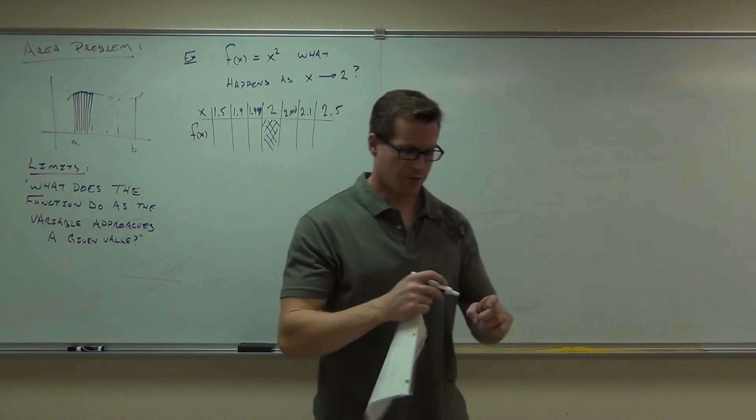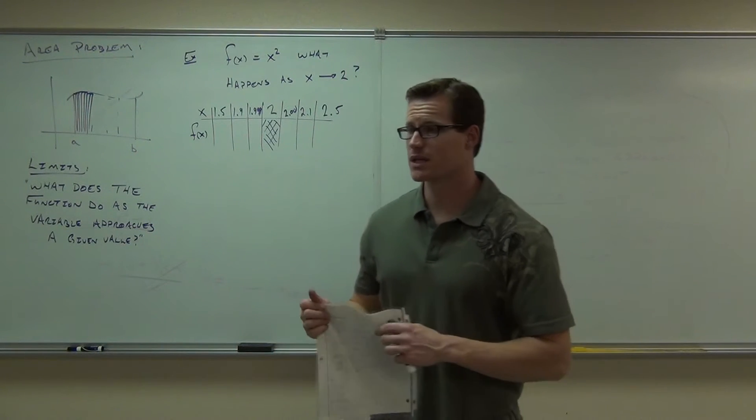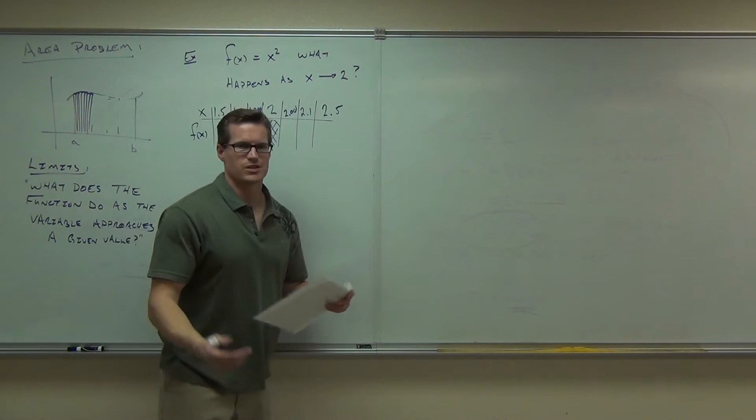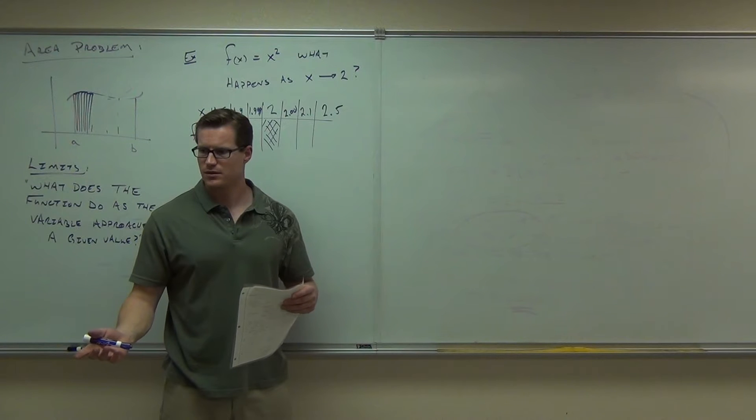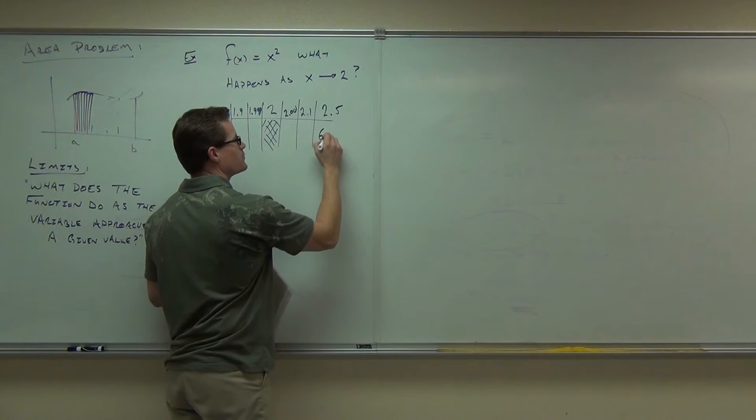Take those numbers. Our function's x squared. Let's look what happens to the function as we plug those things in. If you plug in 2.5, what do you get? 6.25 or something like that? Plug in 2.5. Do you get 6.25? Yeah.